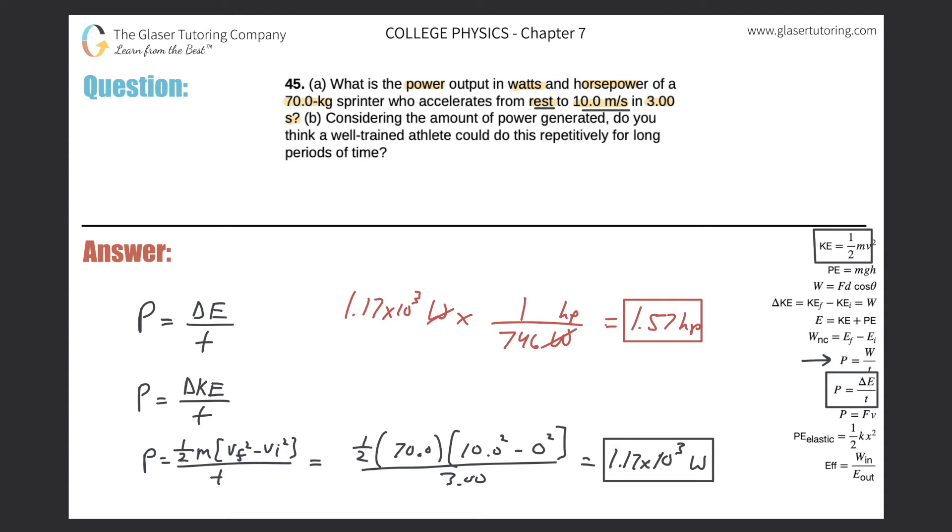Let's take a look at letter B. Considering the amount of power generated, do you think a well-trained athlete could do this repetitively for long periods of time? I don't think so. By looking at this number, about 1,000 watts, I think it makes it a little more clear by converting it into horsepower. This is about the power of one and a half horses.